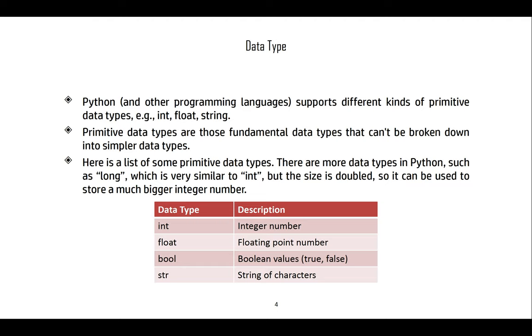Python and other programming languages support different kinds of primitive data types. This is the context for the strings. We have integers, floating point variables, strings, and Boolean variables. These primitive data types are the fundamental data types that cannot be broken down into simpler data types.